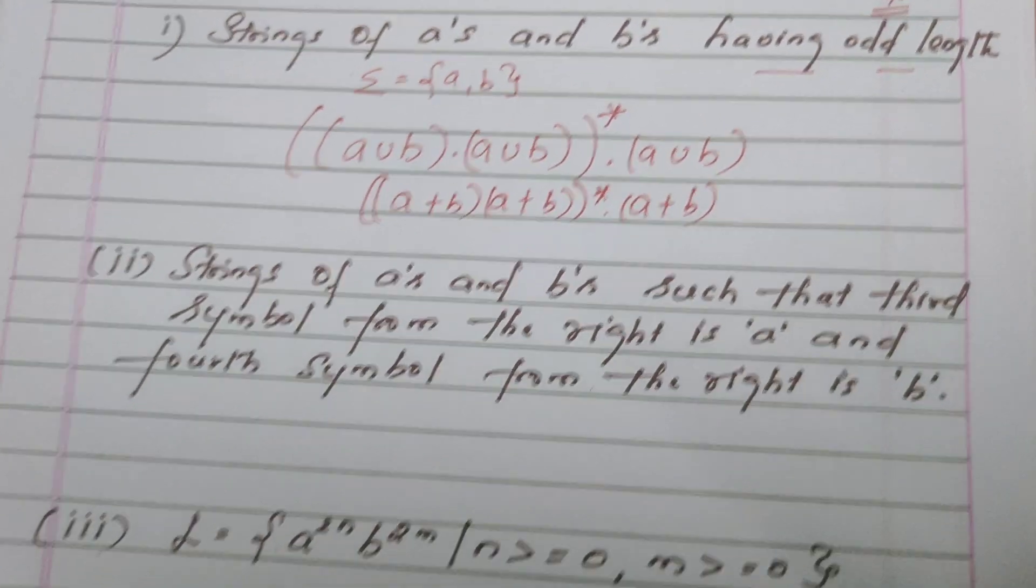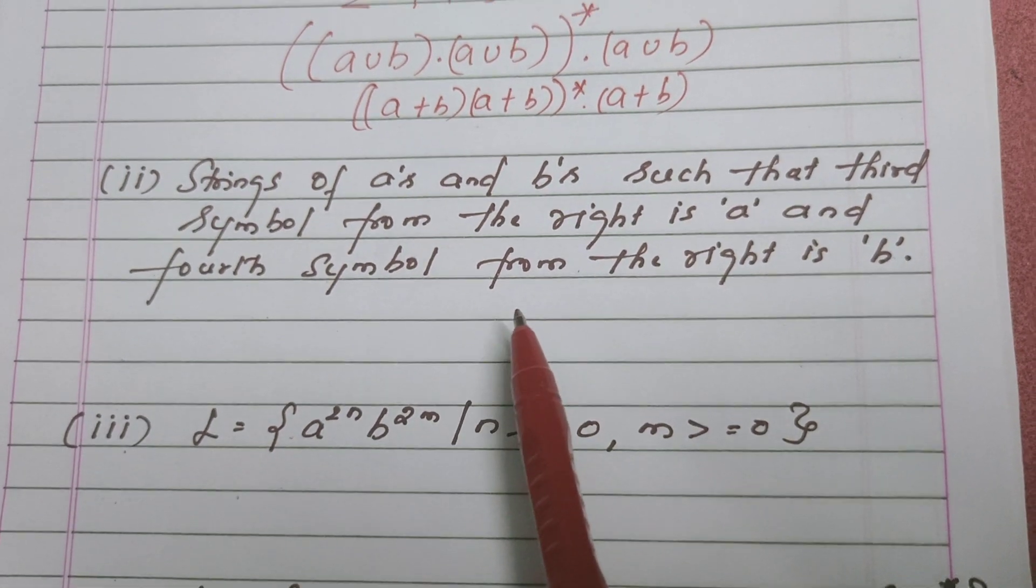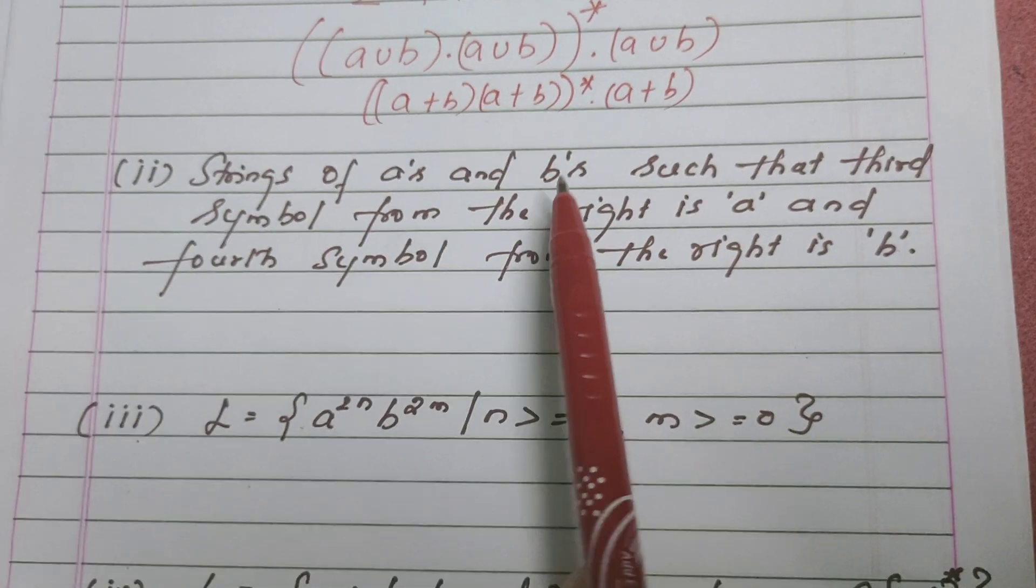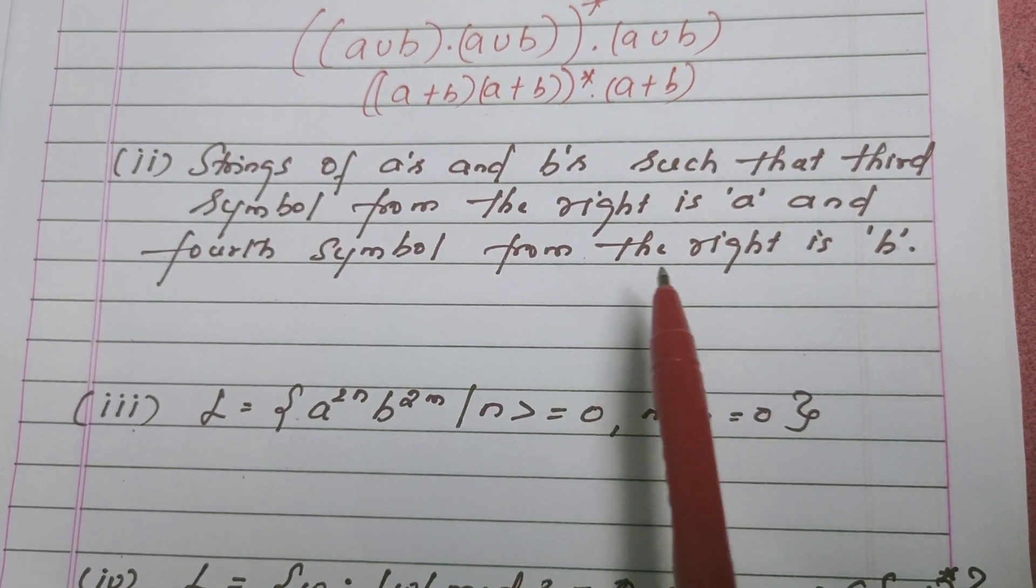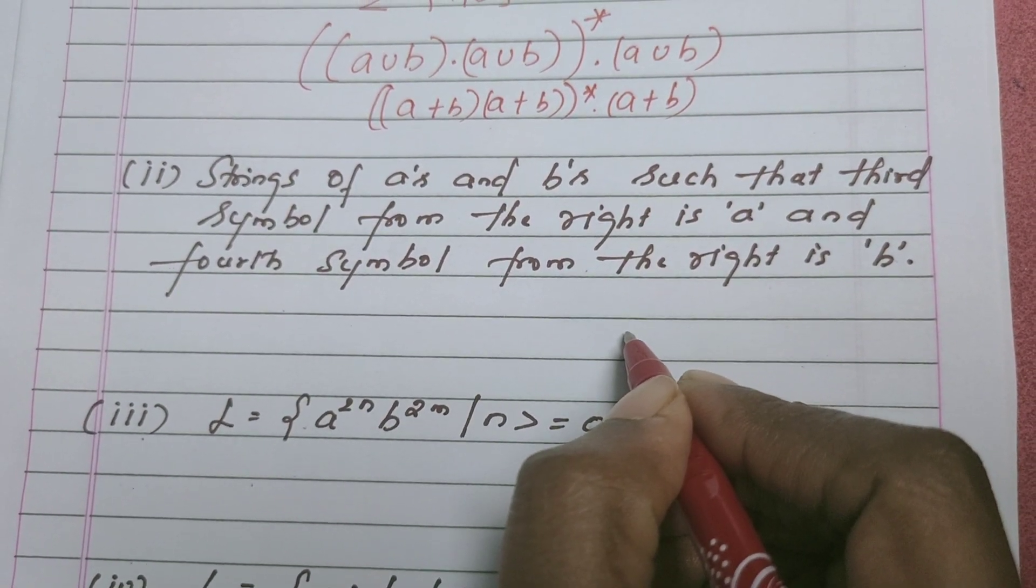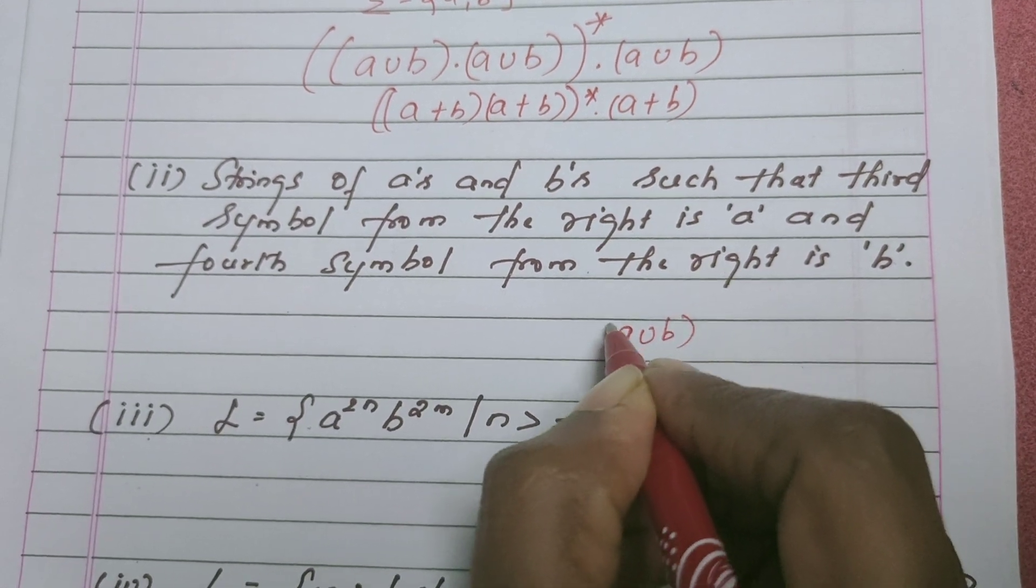Now we move on to the second question. The second question seems to be bigger but answer is very simple. Strings of A's and B's again, such that third symbol from the right is A and the fourth symbol from the right is B. So from the right we start writing the regular expression. The last symbol can be either A or B.